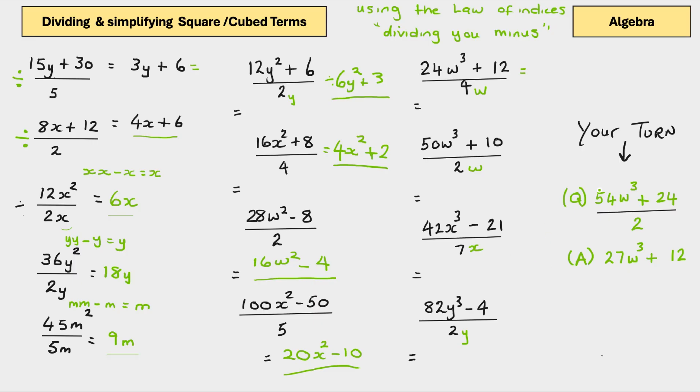So, we have 24w cubed plus 12 divided by 4w. 4 divided by 24, which is 6. And here, we've got 3 w's. Haven't we? We've got the w cubed. And a w at the bottom. So, what have we got left? We've got w squared. So, in theory, we've just done w cubed subtract w equals w squared. So, the answer there is 6w squared plus 4 divided by 12. 4 divided by 12 is 3. So, that would be your answer, 6w squared plus 3.